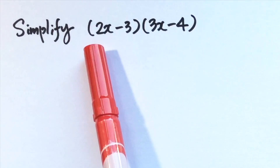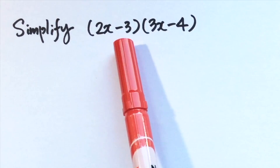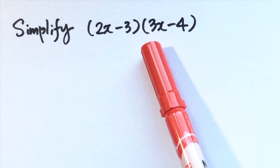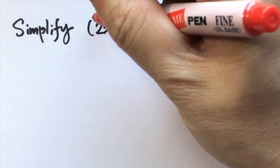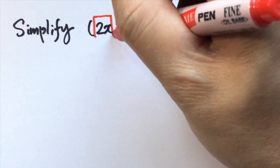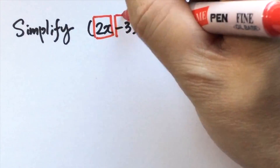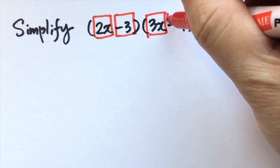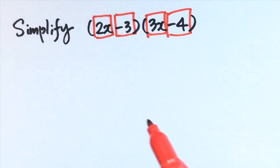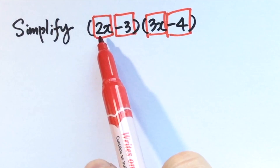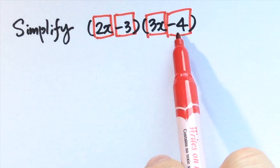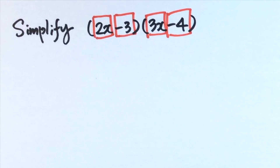Example: simplify (2x - 3)(3x - 4). First of all, we chunk the polynomial into separate terms, so we have a total of four terms: 2x, negative 3, 3x, negative 4.